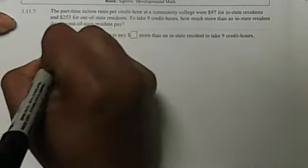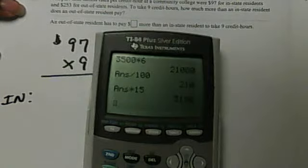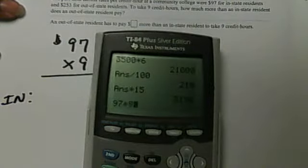If you're an in-state student, you pay $97 a credit, and you're trying to take nine credits. So your amount as an in-state student will be 97, use our calculator, will be 97 times nine. So as an in-state student, you'll be paying $873.